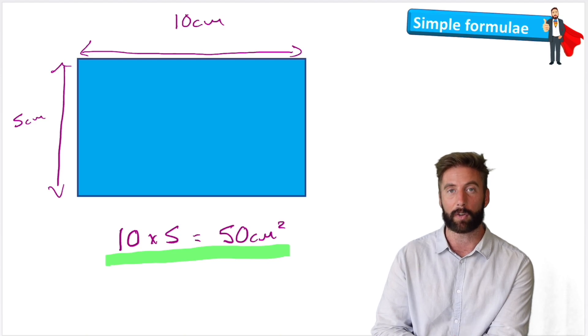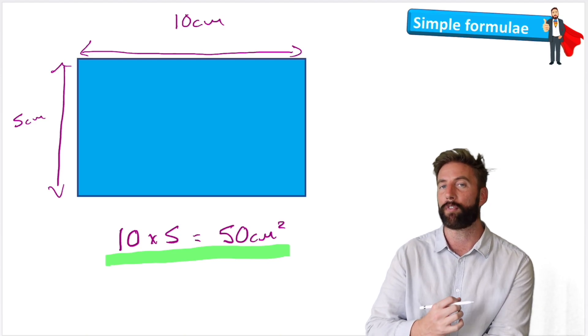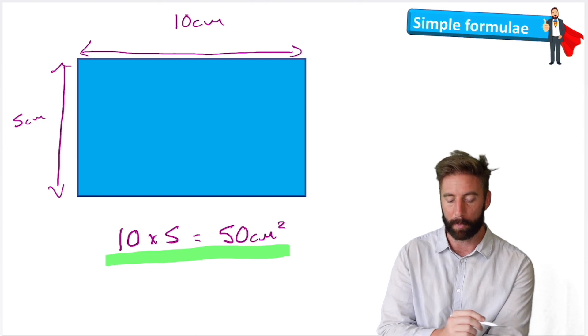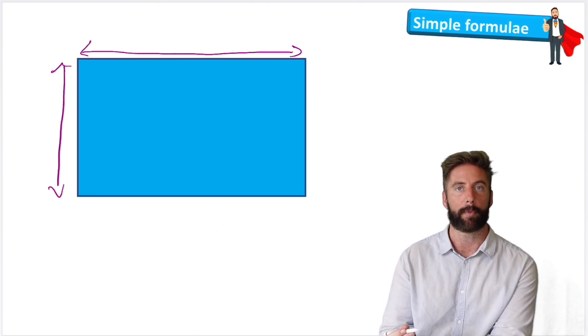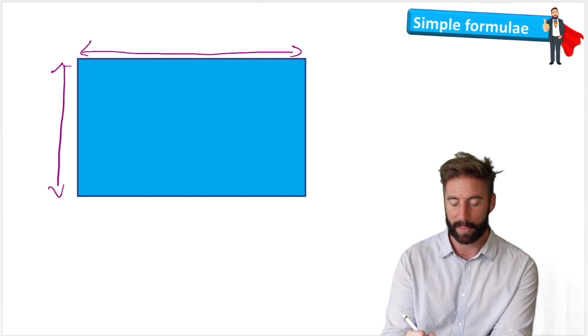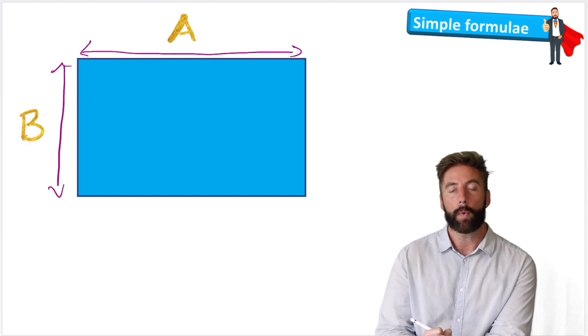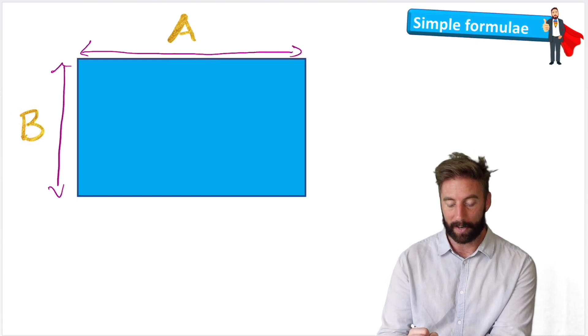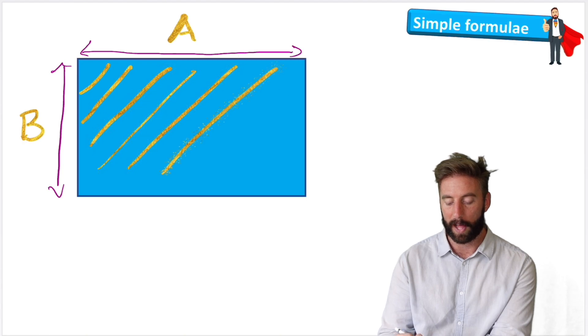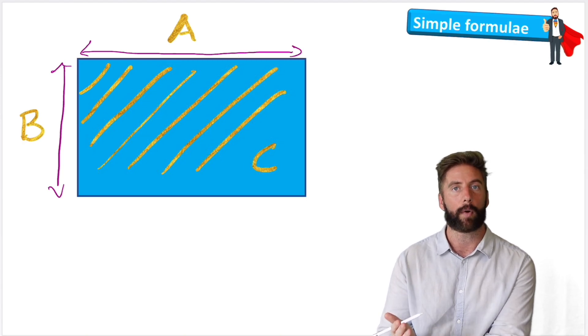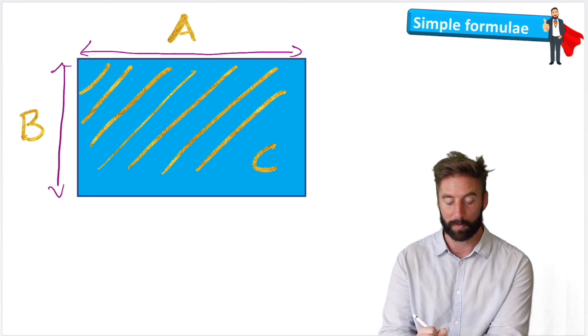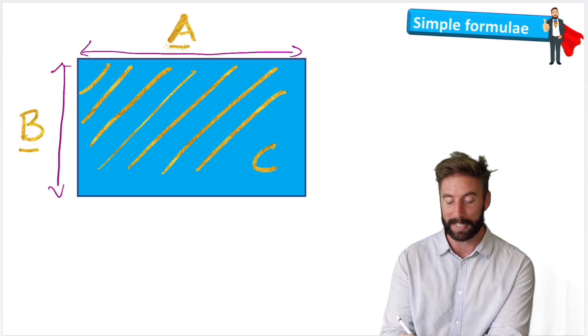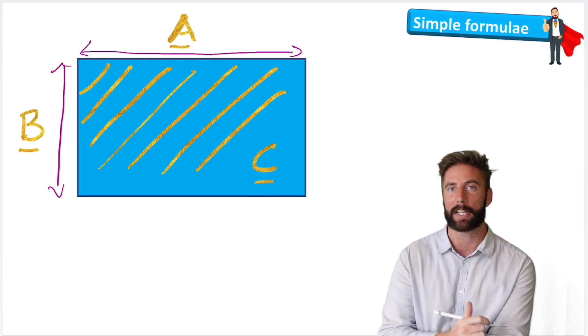But there's another way of solving this rectangle and one that would work solving every rectangle. Let's jump into looking at a formula. Imagine now that we replace these measurements with a variable, a letter, and we call the length A and we call the width B. And what we're trying to work out is the area, this shaded blue area. So we're going to call that C. Now instead of being a numerical equation we're now going to create an algebraic equation because we've now got these variables, these letters that take the place of a number.